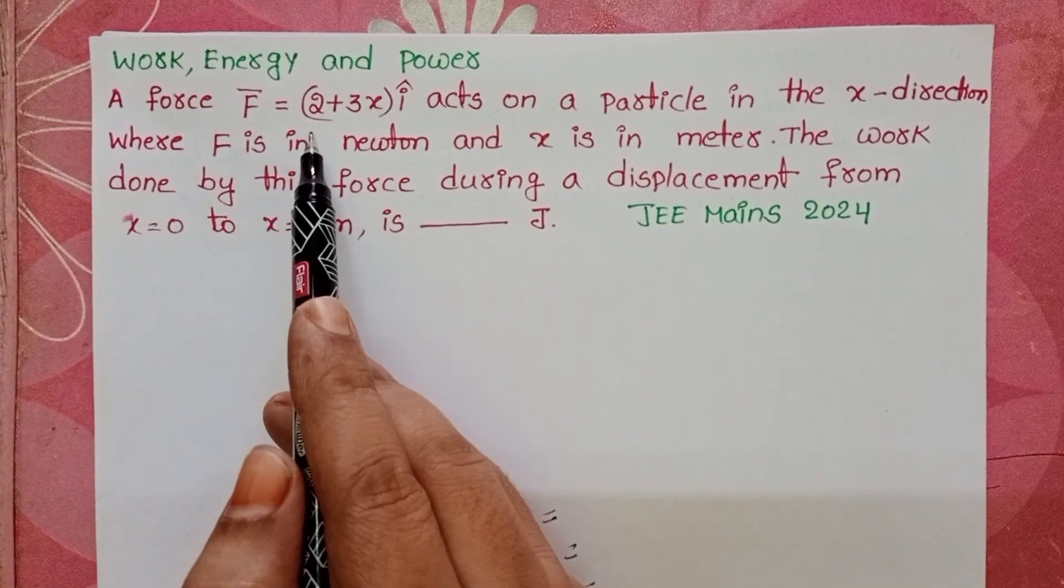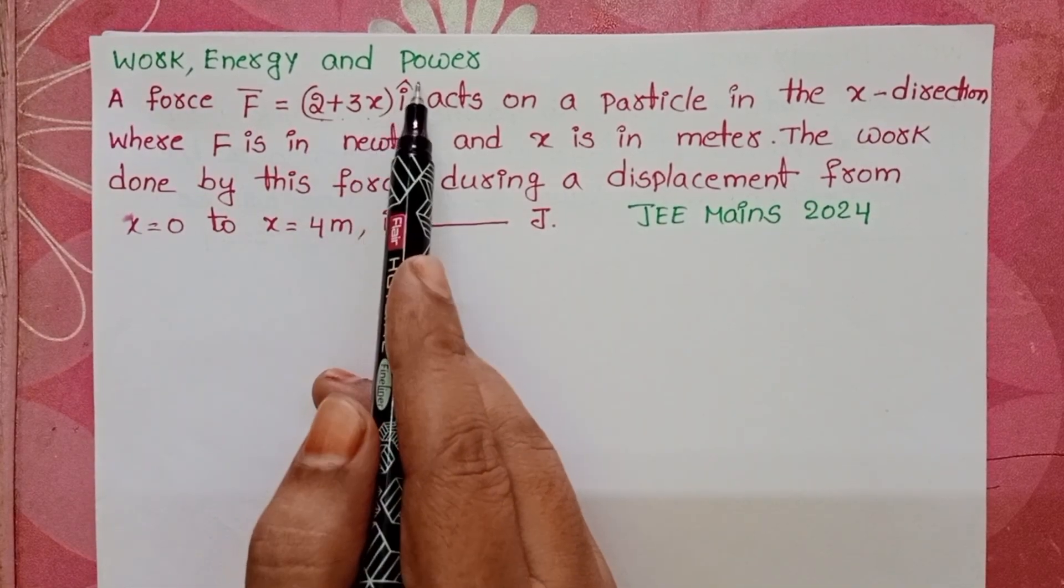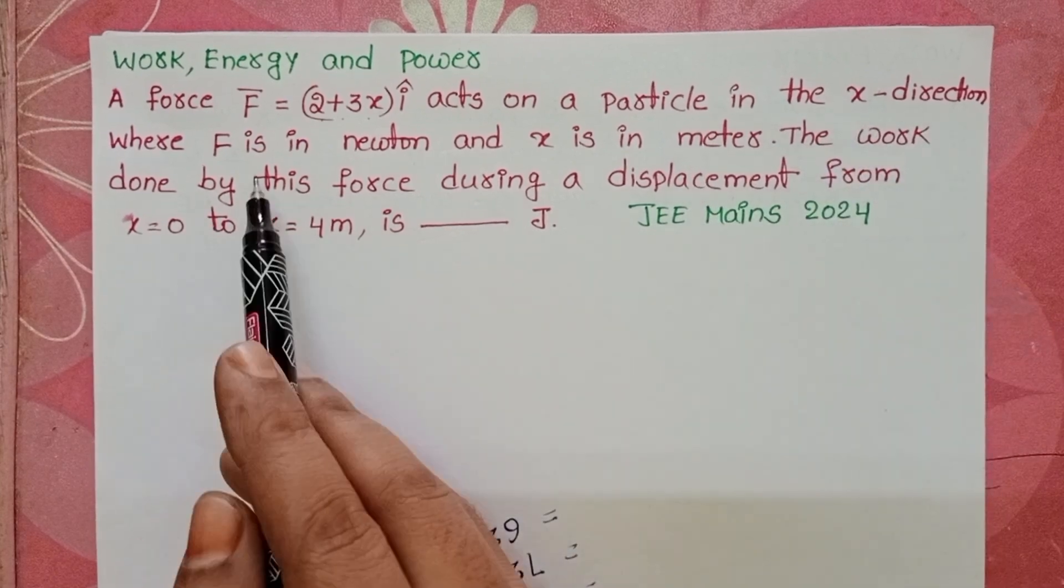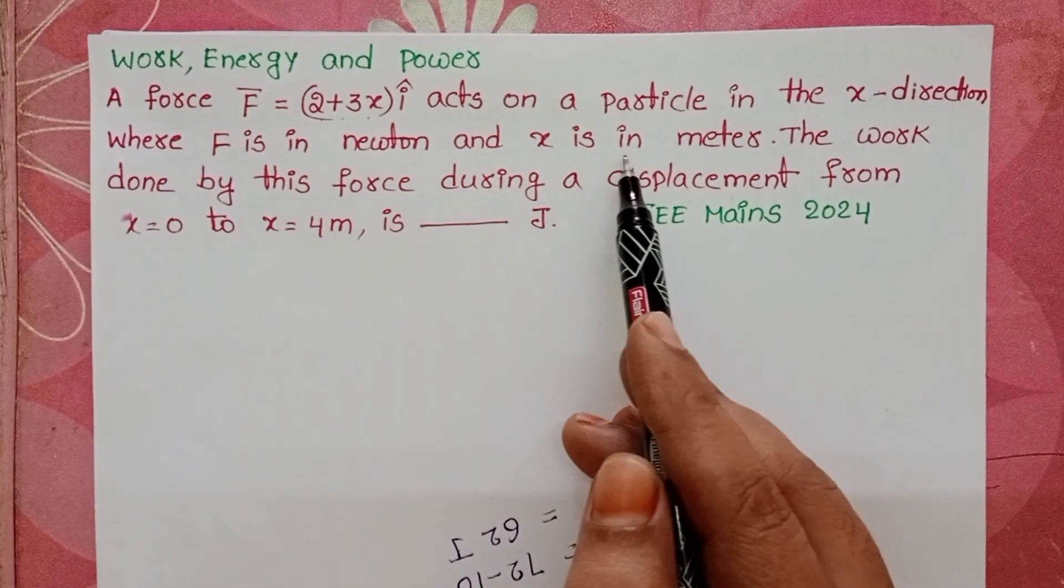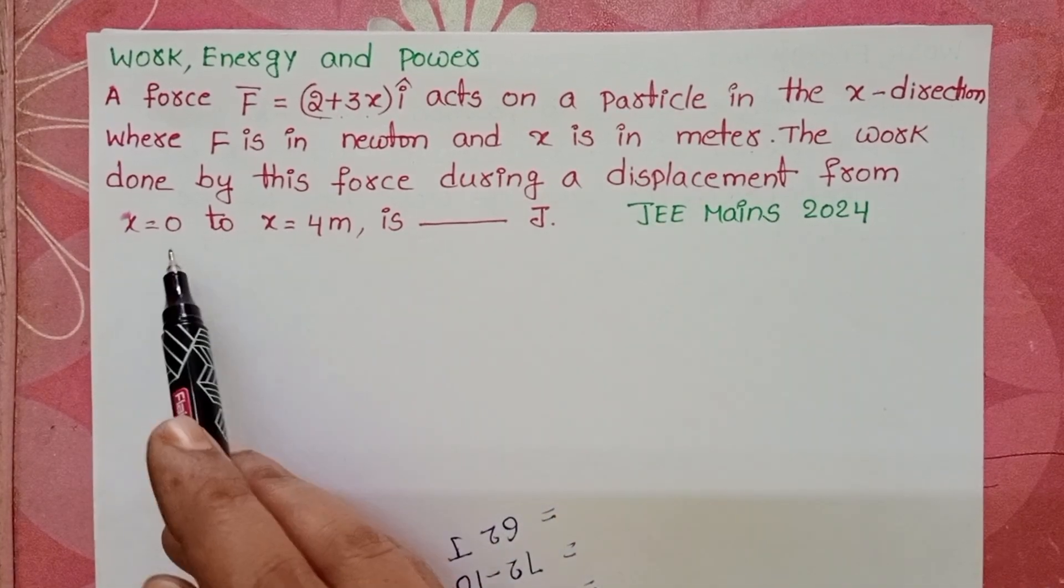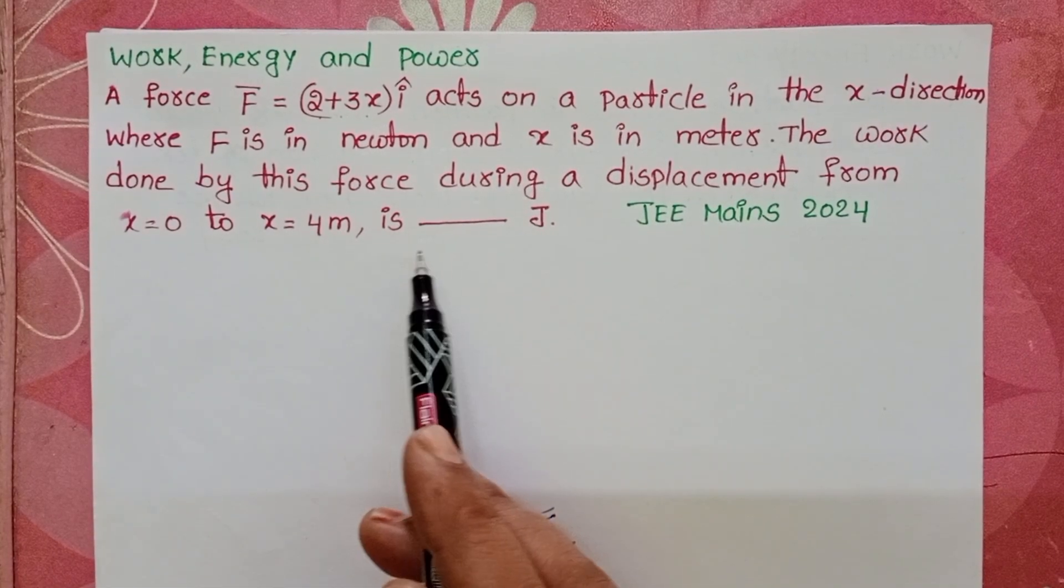A force F = (2 + 3x)î acts on a particle in the x-direction, where F is in Newton and x is in meters. The work done by this force during a displacement from x = 0 to x = 4 meters is.